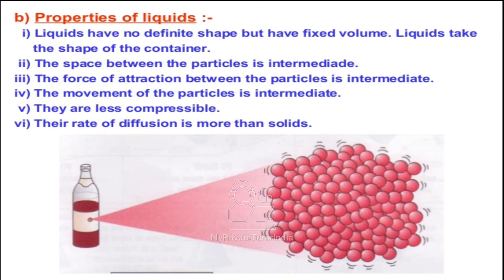Third, the force of attraction between the particles is also intermediate. Therefore, the movement of particles is also intermediate. They are less compressible and the rate of diffusion is more than solid but less than gaseous. In liquid, sab kuch intermediate hota hai — force of attraction intermediate, spacing intermediate — and therefore diffusion capacity is less as compared to gas and more as compared to solids. These were the properties of liquid.